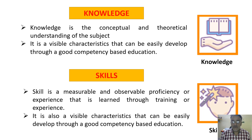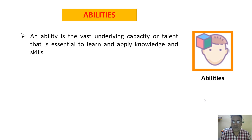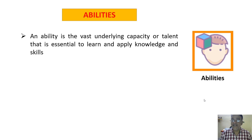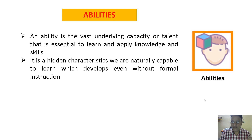The last one is abilities. Ability is the vast underlying capacity or talent that is essential to learn and apply knowledge and skills. It is a hidden characteristic — we are naturally capable of it — and it develops even without formal instruction.